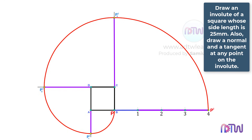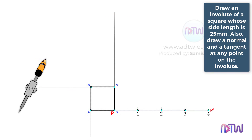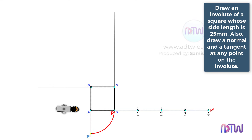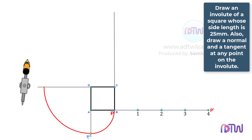Another simple way is this: take a compass and adjust it to the length between points A and B, and using point A as a center, draw an arc from point B to this line. Label this point as P1. Next, adjust it to the length between points D and P1, and using point D as a center, draw an arc from point P1 to this line. Label this point as P2.